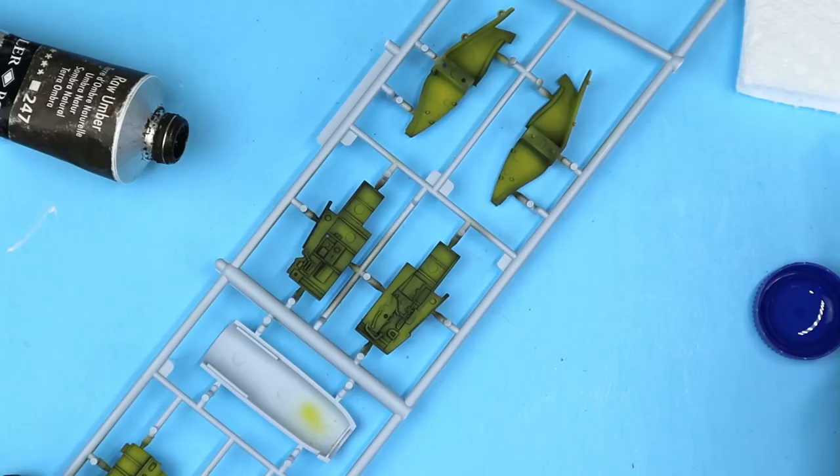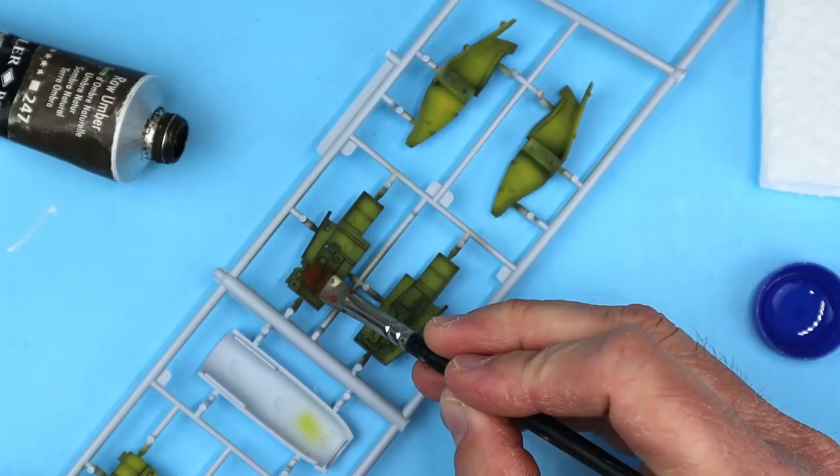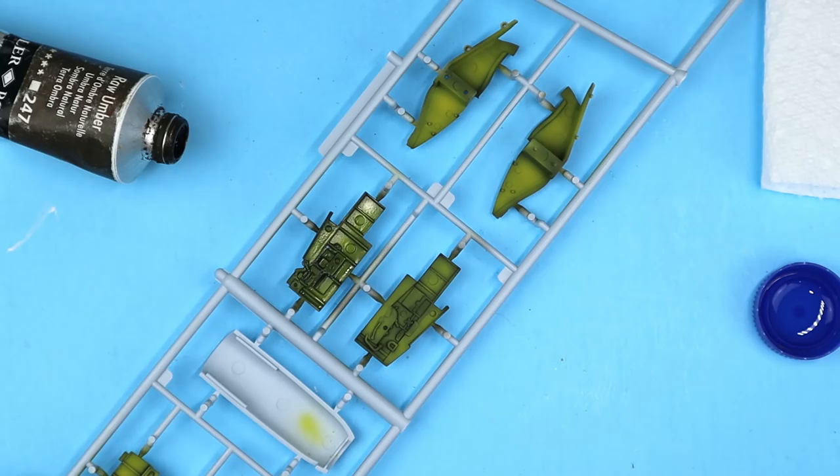Now it was time to start adding a little more weathering effects to the parts that had just been sprayed. To achieve these effects I used white spirits and oil paints straight from the tube. I first applied a coat of white spirits to each of the parts using a clean brush.